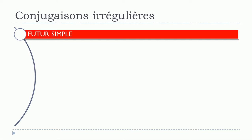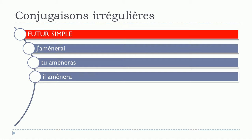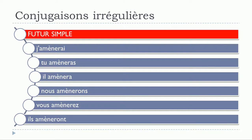Let's see now for the futur simple: j'amènerai, tu amèneras, il amènera, nous amènerons, vous amènerez, ils amèneront. We can see here that all the forms are concerned and all the forms are modified, but the modification is exactly the same as we saw previously — it's just this accent grave that you put on top of this 'e'.